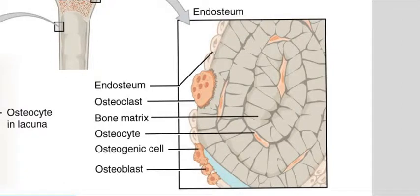Before we get to the processes involved in calcium homeostasis, I want to remind you of the major cell types that are going to be important here. There are osteoblasts, which are responsible for building up bone matrix by secreting the protein-rich osteoids that help to incorporate calcium phosphate crystals into the bone matrix. And osteoclasts — those unusual cells that are derived from white blood cells and break down the bone matrix, releasing the calcium back into circulation.